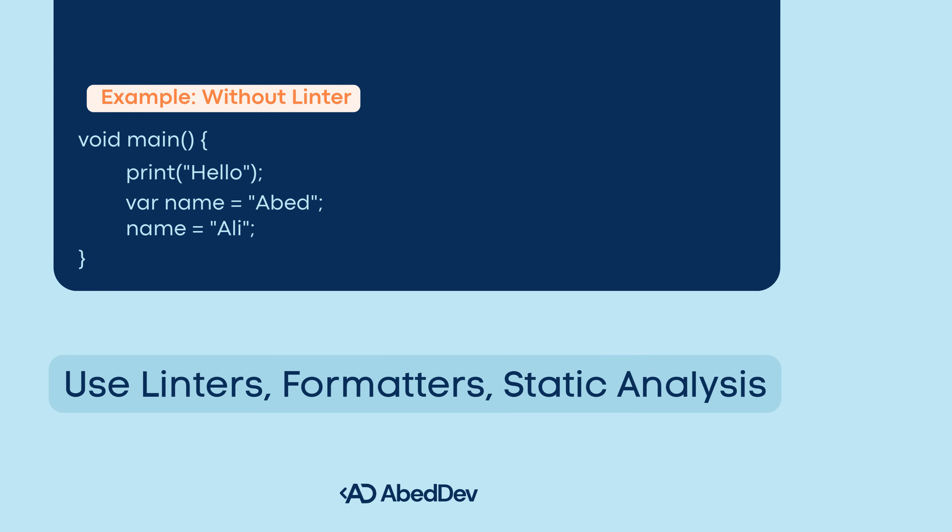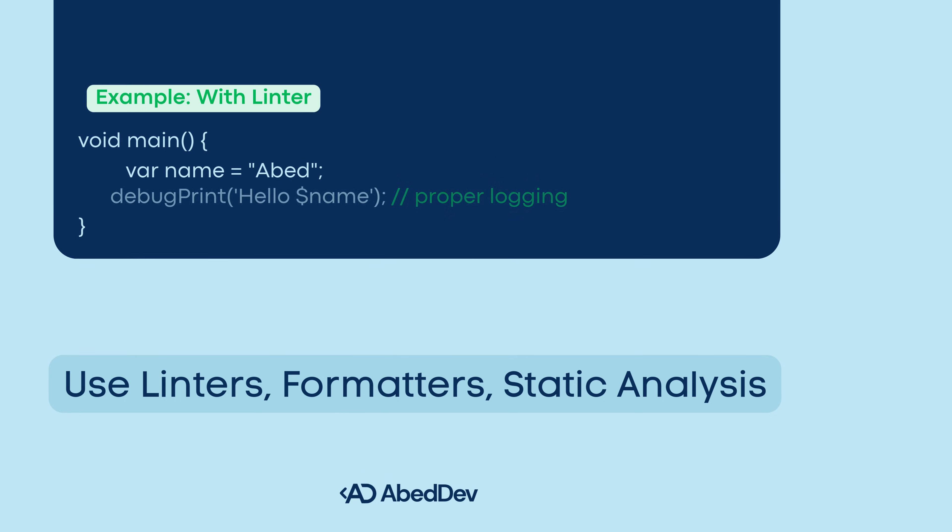Step 3: Example without linter. This will run, but it uses print instead of a proper logger. It uses var instead of final where the value never changes. Formatting may not be consistent. Step 4: Example with linter. The linter forces proper logging, debug printing instead of print, use of final for immutable values, and consistent code indentation and spacing.